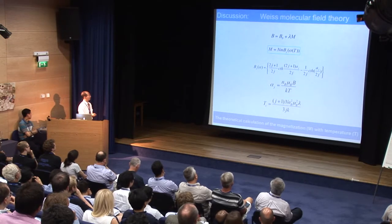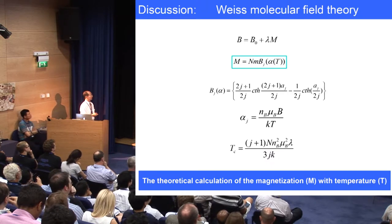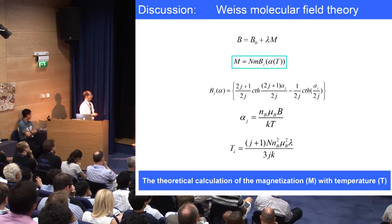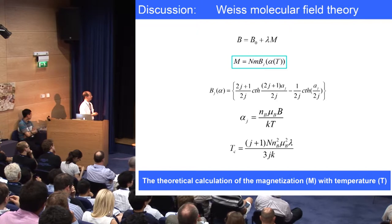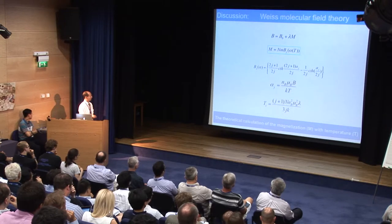B is the internal field strength, and B0 is the applied field strength. Lambda is the Morganov constant, and M is the magnetization. The magnetization can be expressed by this equation, and Bj is the Brillouin function. Lambda can be obtained by this equation. Combining these equations, we can get the relationship of magnetization with temperature.